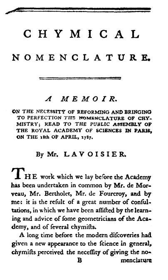Type 2 ionic binary compounds are those in which the cation does not have just one oxidation state. This is common among transition metals. To name these compounds, one must determine the charge of the cation and then write out the name as would be done with type 1 ionic compounds, except that a Roman numeral indicating the charge of the cation is written in parentheses next to the cation name.